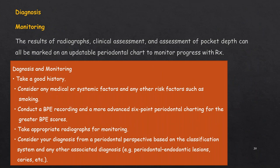Diagnosis and monitoring: diagnosis is based on the new classification system discussed earlier. Monitoring includes radiographs, clinical assessment, and pocket depth measurements recorded on an updatable periodontal chart. To summarize the approach: take a thorough history considering medical, systemic, and risk factors such as smoking. Conduct BPE recording and more advanced six-point periodontal charting for higher BPE scores. Take appropriate radiographs and formulate a diagnosis based on the classification system, including any associated diagnosis such as periodontal-endodontic lesions or caries.